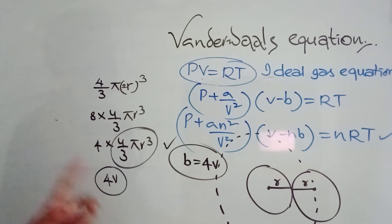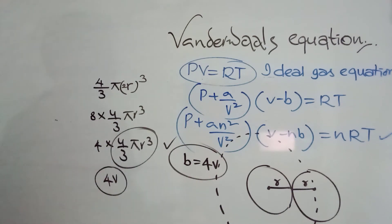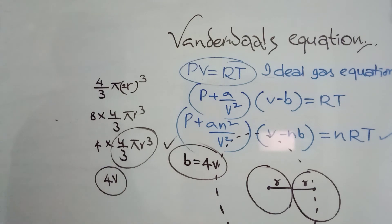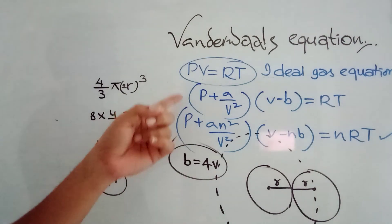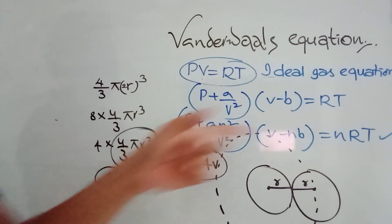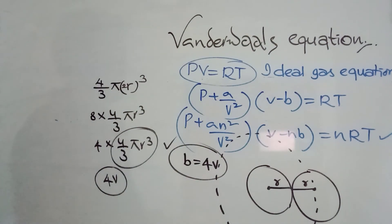This is an important point that can be asked in examinations. In summary, the Van der Waals equation is applicable for all real gases. Real gases behave like ideal gases at high temperatures and low pressures, but this equation works at any condition. For 1 mole: (P + a/V²)(V - b) = RT. For n moles: (P + an²/V²)(V - nb) = nRT.